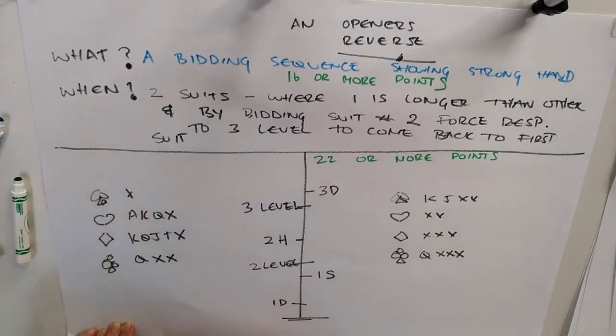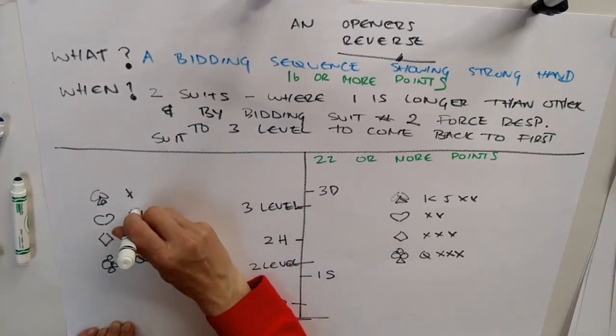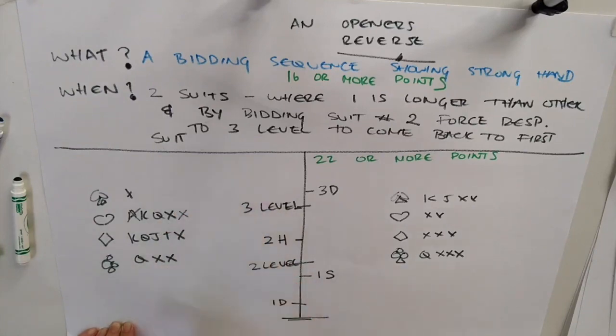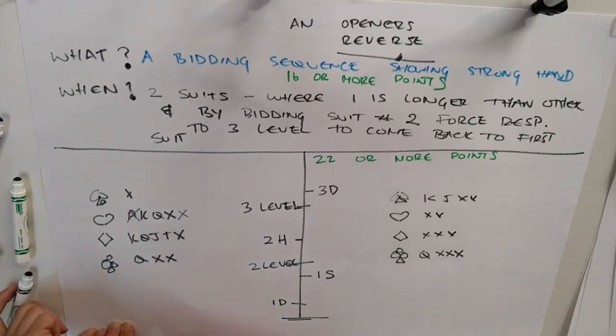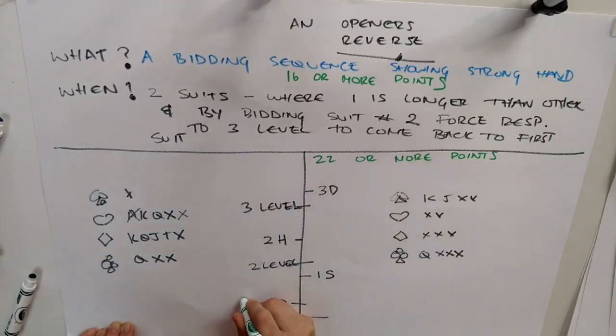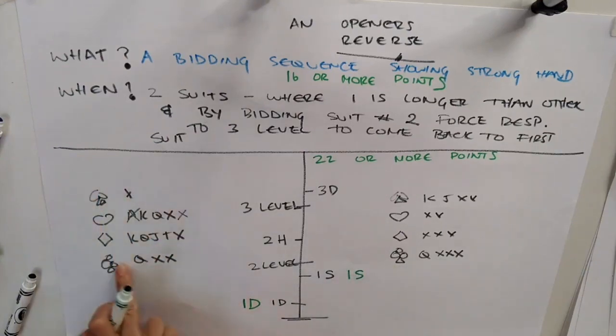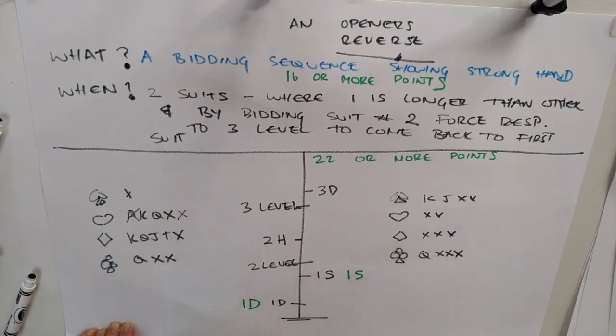Now I'm going to change this Opener hand slightly and take away one of these good cards and replace it with something not so good. So now this Opener hand is just a normal minimum opening hand. So again, they are going to open a diamond. And again, this person here is going to apply a spade. But now, this Opener cannot bid two hearts.